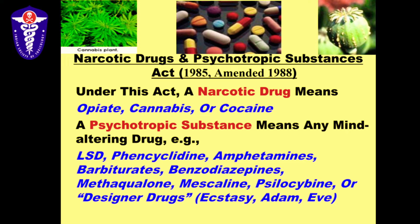Psychotropic substance under this act means any mind-altering drug — anything which causes for instance hallucinations, disorientation, confusion, and of course euphoria. So we have a number of drugs here including LSD, which is a very powerful hallucinogen; close to that is phencyclidine; amphetamines, which are stimulants; barbiturates; benzodiazepines; methaqualone, which was very popular in the 70s and 80s as a substance of abuse — it went by the brand name Mandrax in India or Quaaludes in the west; then mescaline derived from cactus; psilocybin derived from mushroom; and a number of designer drugs.